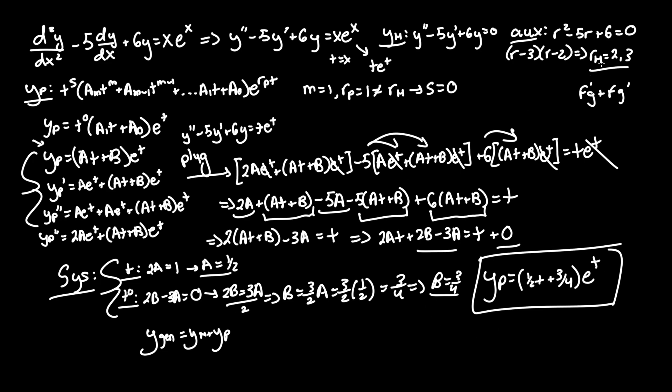So for your y homogeneous, just have the solution for rh equals 2 and 3. And after that, just add y particular solution, which we just found here. And that's all you have to do. I hope this helped. If it did, please like and subscribe, and I'll see you in the next video.